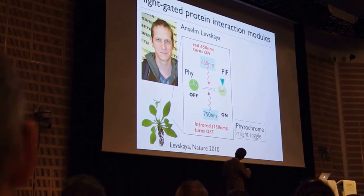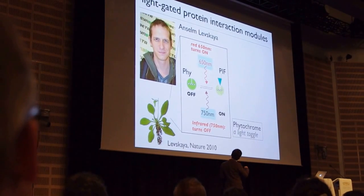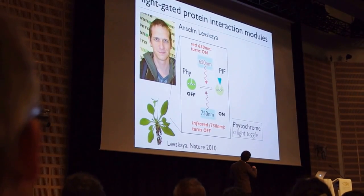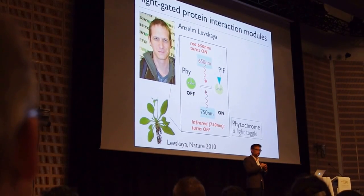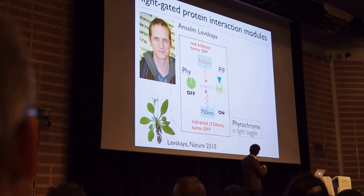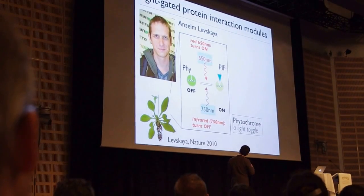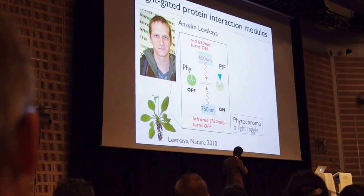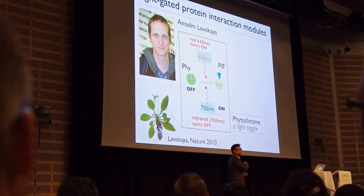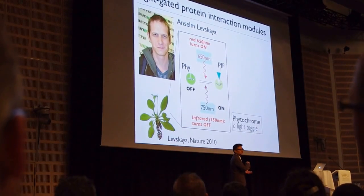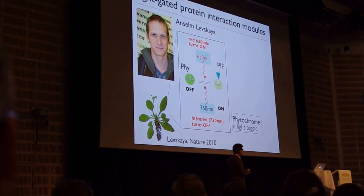If you hit it with 650 nanometers, then it changes conformation and it will bind — the phytochrome protein will bind to this PIF interaction unit. So it's an interaction module composed of two things. What's really nice about this system is you can actually hit it with a different wavelength, like 750, and toggle it off. So it's quickly reversible.